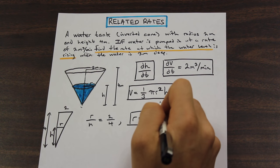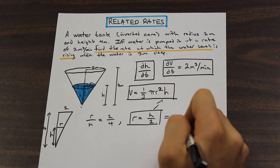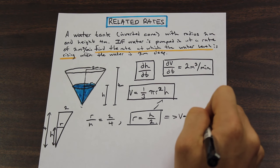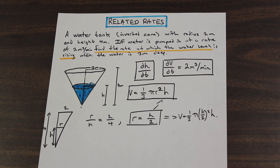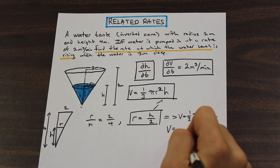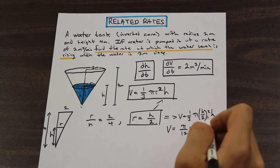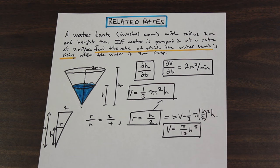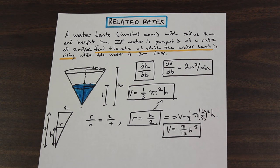Plugging R = H/2 into the volume formula gives us V = (1/3)π(H/2)²·H. If we simplify that, we get V = (π/12)H³. That's much more simple — we're only left with one variable on the right side, which is exactly what we want.